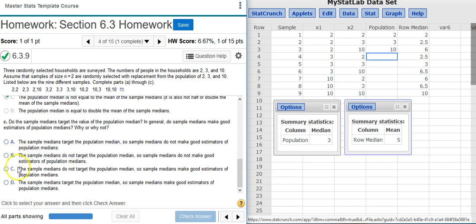So here right off the bat, I know answer option A and answer option D are incorrect, because they say the sample statistic targets the population parameter. Here that's not the case.